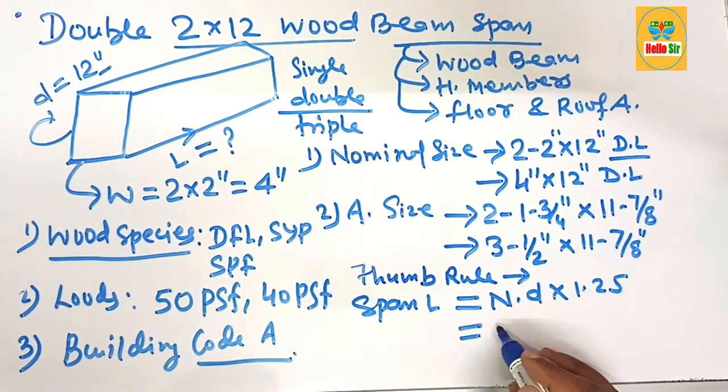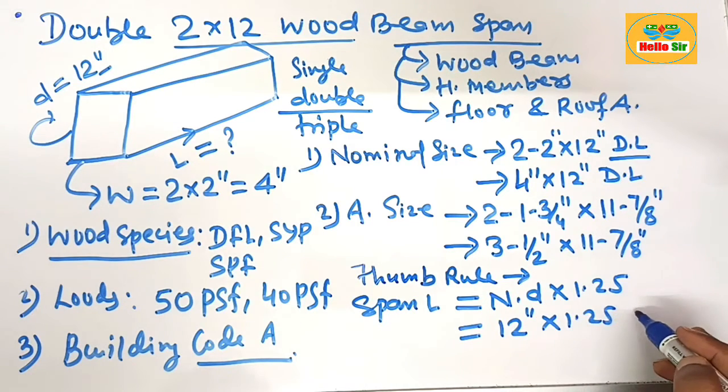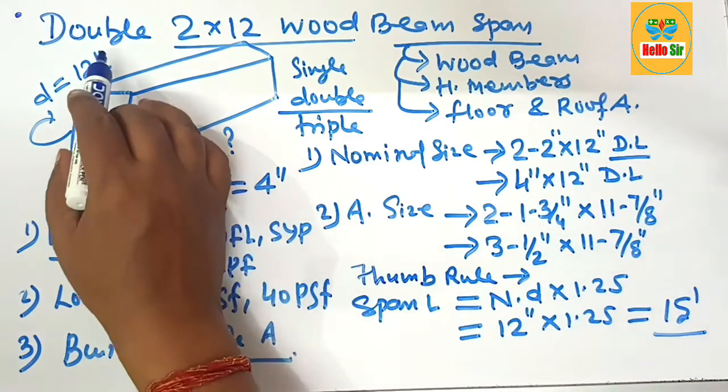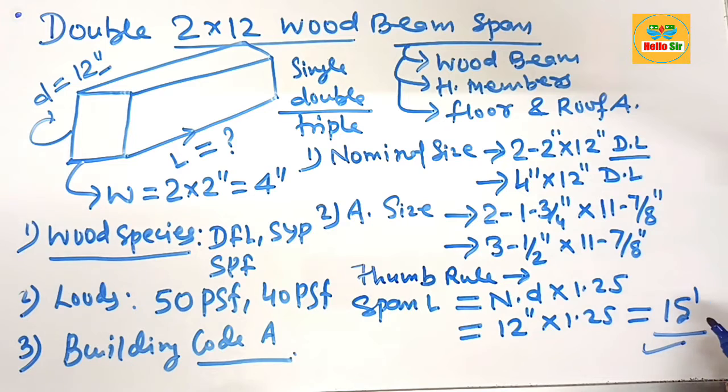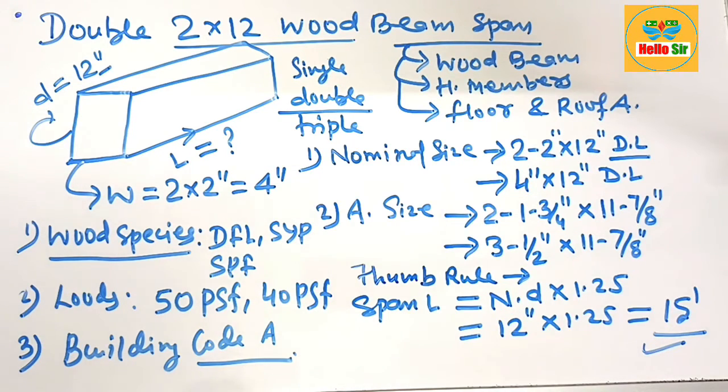The nominal depth is 12 inches. 12 inches times 1.25 equals about 15 feet. It means a double ply 2 by 12 wood beam can span approximately a maximum of 15 feet in length. Thank you.